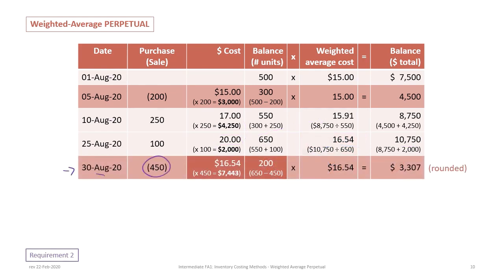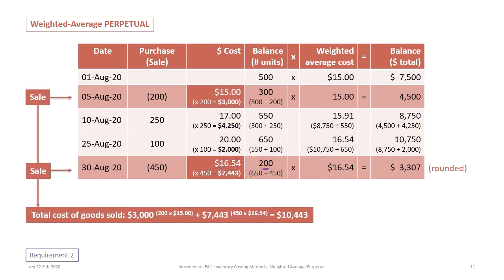On August 30th we have a sale of 450 units, and we calculate the cost of goods sold as 450 units times the $16.54 average cost — the same idea as the first sale where we used the average cost at that time. Our balance at the end is 200 units (650 minus 450) at the unchanged average cost of $16.54, for a total of $3,307. Combining both sales: $3,000 from the first sale plus $7,443 from the second gives us total cost of goods sold of $10,443.